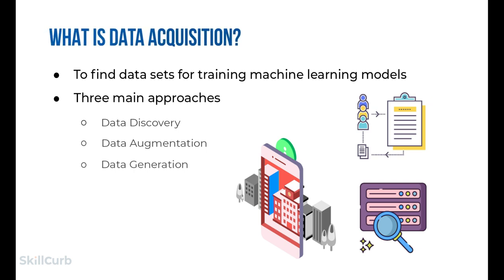There are mainly two basic requirements for machine learning applications: data collection and a model. Data acquisition is the core part for machine learning and artificial intelligence. The three basic approaches to data collection are: data discovery (collection and analysis of data from various sources to gain insights from hidden patterns and trends), data augmentation (increasing the diversity of data available for training without collecting new data, using techniques like cropping, padding, and horizontal flipping), and data generation (creating data from a sampled data source, with sources including human participants, documents, organizations, electronic media, and events).